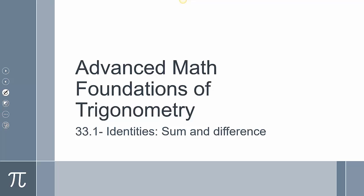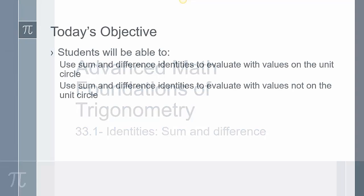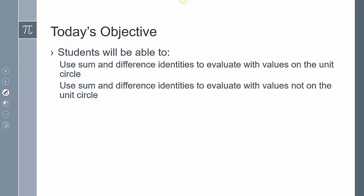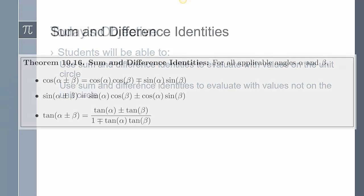This is going to be 33-1. We're going to take a look at sum and difference identities. Today you're going to be able to use those sum and difference identities to evaluate values on the unit circle, and we're going to use those same identities to evaluate values not on the unit circle.